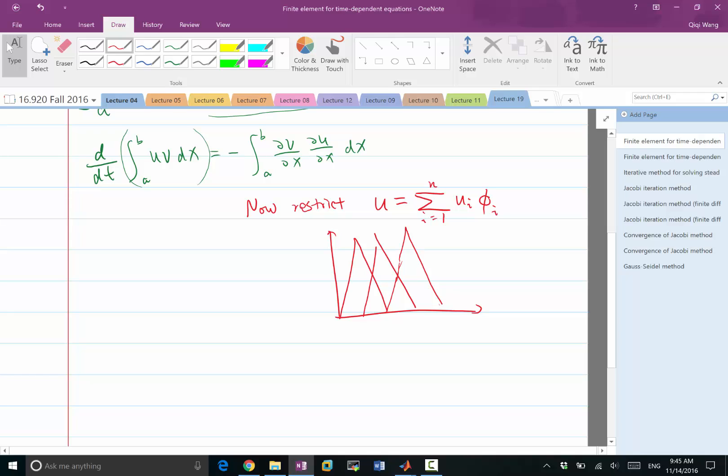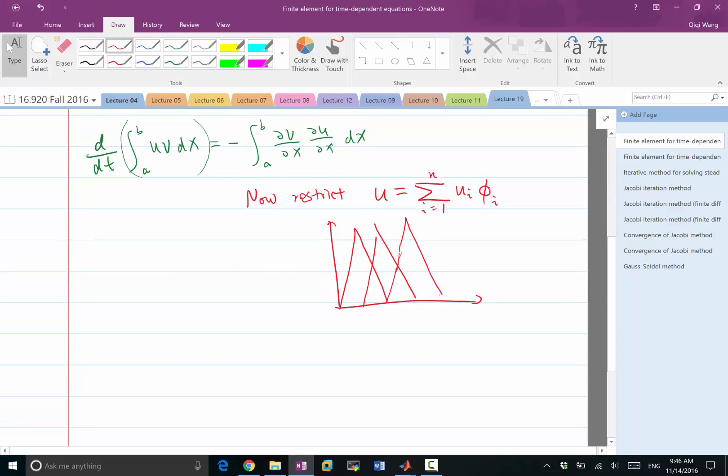Now we also substitute phi_j to our test function v, because if this is satisfied for v equal to any of the phi_j's, this can be satisfied by the principle of linear superposition for all the v's that can be expressed as linear combination of phi_j's.